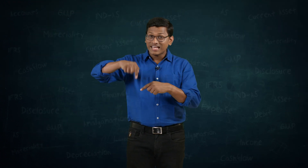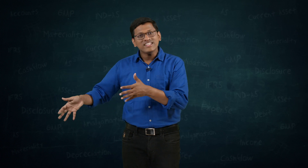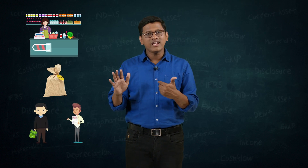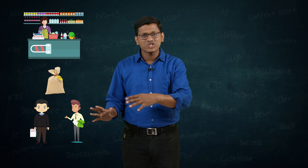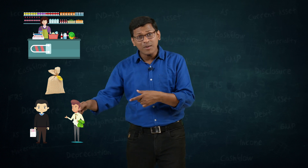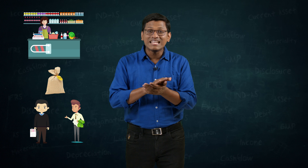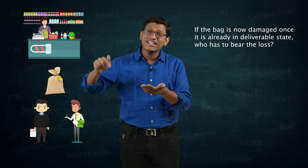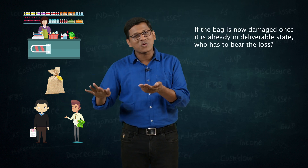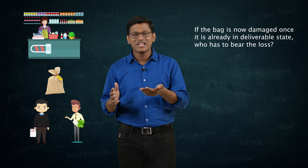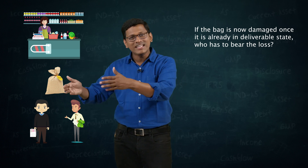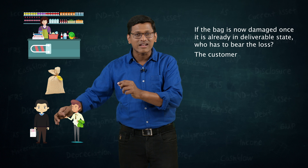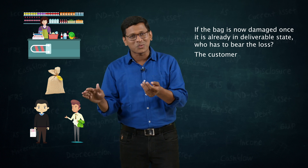Now let's slightly change the example — align it with something already discussed. The bag is already there; you've made payment and received the invoice. But you, as the customer, said: shopkeeper, keep these goods with you — I'll go buy something else and come back to take it. Here the delivery is delayed at the buyer's request. The goods are ready in deliverable form, but the buyer is delaying. In this case, can we say risk and reward is transferred? Yes — risk and reward is considered to have been transferred.